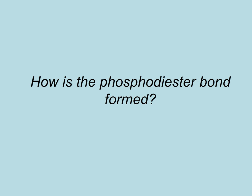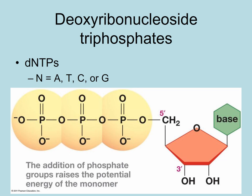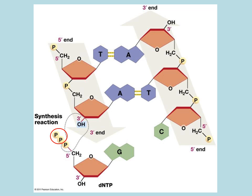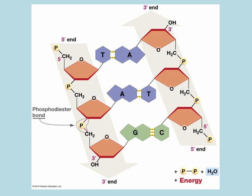How does the phosphodiester bond between nucleotides form? The nucleotides used to build DNA have three phosphate groups. These molecules are called deoxyribonucleoside triphosphates, or dNTPs. The N stands for the base and can be adenine, thymine, cytosine, or guanine. This molecule is similar to ATP because the multiple phosphates store energy in their bonds. Forming a phosphodiester bond is an endergonic reaction. When a dNTP is added to DNA, the second and third phosphates are cleaved from the molecule, releasing energy used to form the phosphodiester bond.